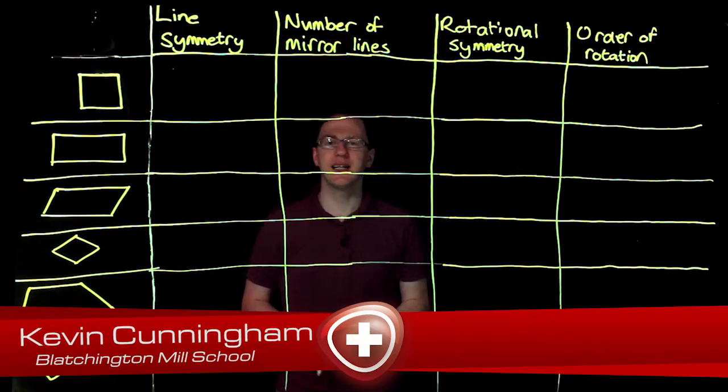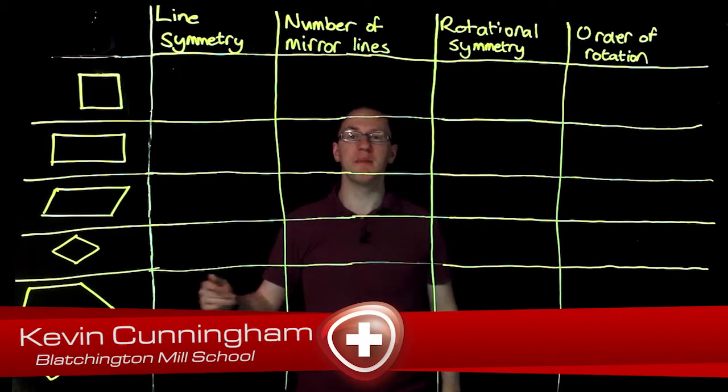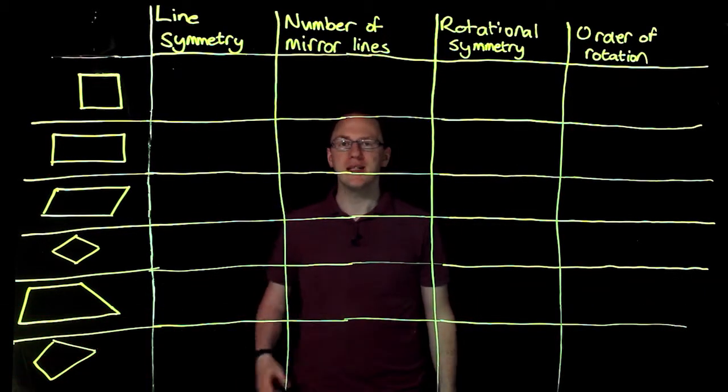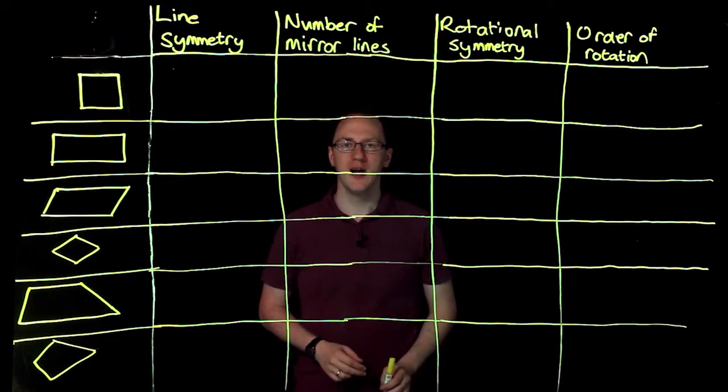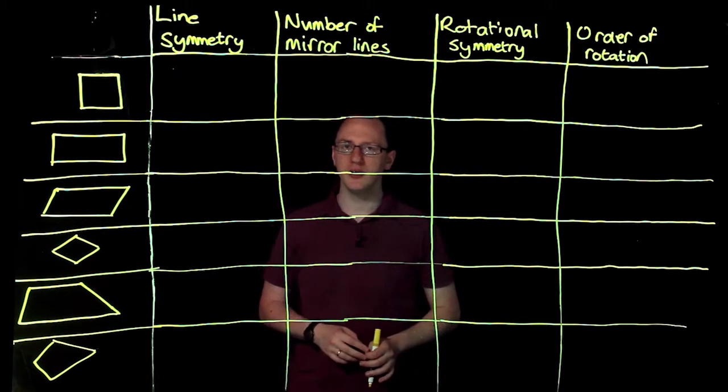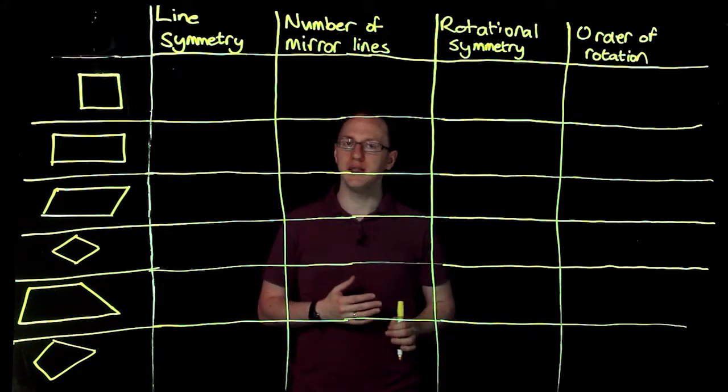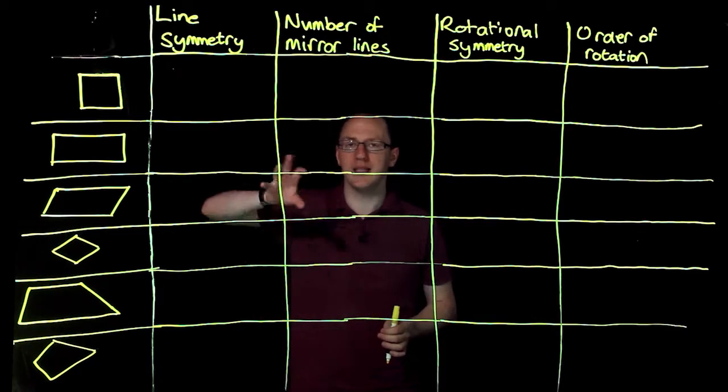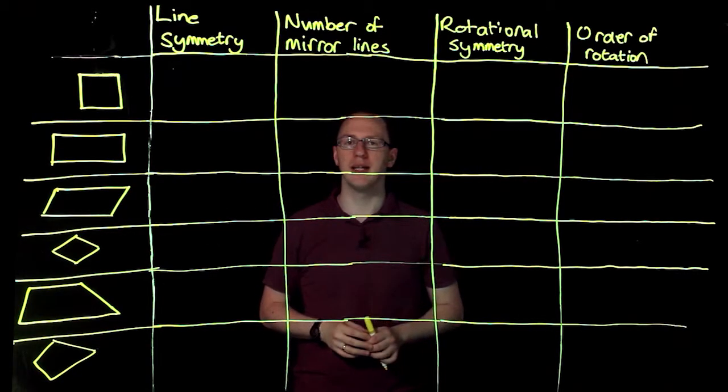Okay, we're going to look at classifying our six special quadrilaterals based on their symmetries. There are two types of symmetries you want to consider: the line symmetry, where the mirror lines are, and the rotational symmetry, where we rotate the shape and try to fit it back into itself.